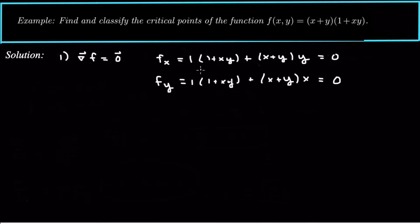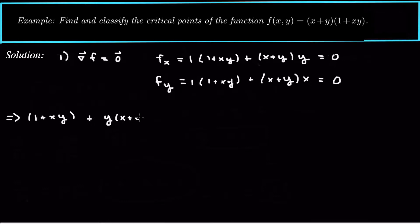Alright, so we've got the partials and we set them equal to zero. Now what we can do is, since both are equal to zero, we can equate them: one plus xy plus y times x plus y should be equal to one plus xy plus x times x plus y. That is the equation we can derive here.